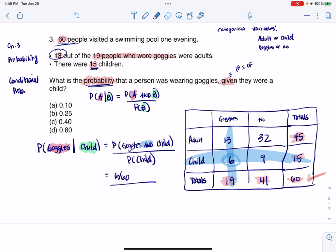And I need the probability of child. If I just want child, there were 15 out of 60 children. Now this becomes arithmetic. We have six over 60 times 60 over 15. The 60s cancel. That leaves me with six over 15. And as a decimal, that is 0.40 or 40%. Let's see what answer that lines up with.